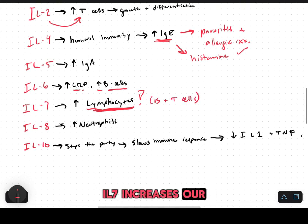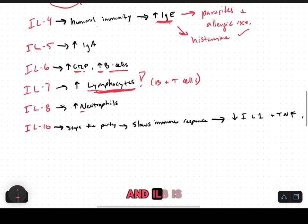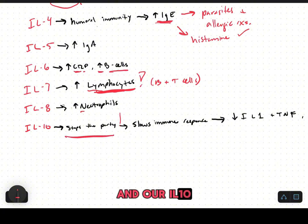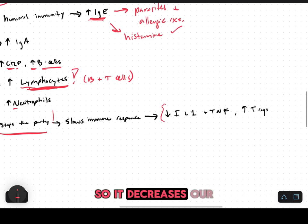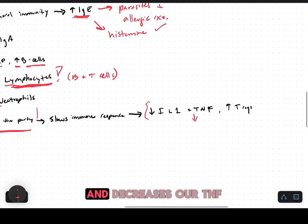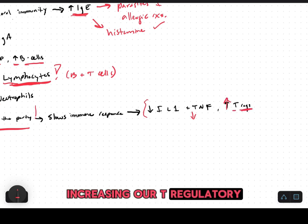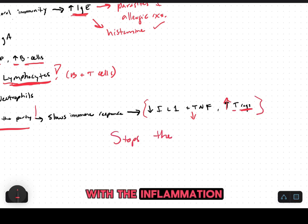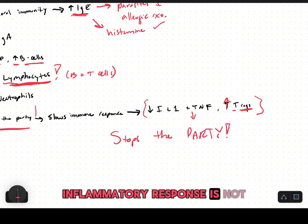Interleukin seven increases our lymphocytes, so it's a recruiting agent. Interleukin eight is going to increase our neutrophils. And interleukin ten stops the party — that's the feedback loop that tells us to stop. It decreases interleukin one and tumor necrosis factor, while increasing our T regulatory cells, essentially telling our body to calm down with the inflammation.